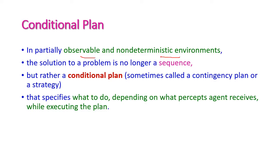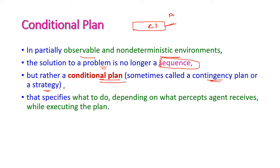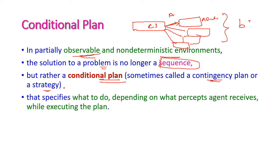In a partially observable and non-deterministic environment, the solution to a problem is not a sequence plan but a conditional plan — sometimes called a contingency plan or strategy plan. In the current state, if we execute any action, we do not know where the next state is. Because the environment is partially observable, the agent can only predict the belief state instead of a single physical state.